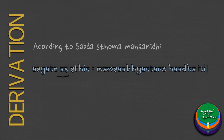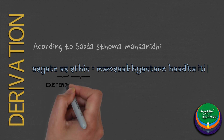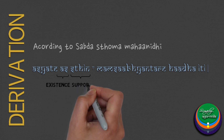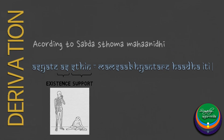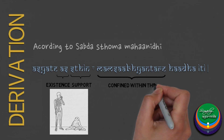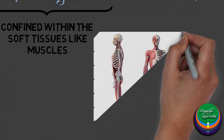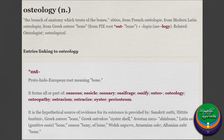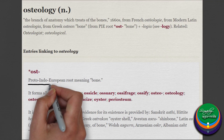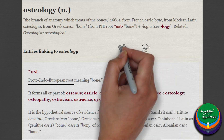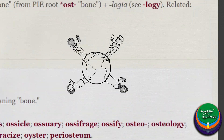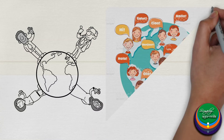The word Asthi is made of two words: Asthi and Stin. The word Asthi represents existence and Stin means to support. Mamsabhyantare denotes that the Asthi is confined within the soft tissues like muscles. We can also observe that the word Os, which is the root of several terms related to bones, has similar etymologies. This gives a clue about the globalization of languages, arts and sciences during the ancient periods.